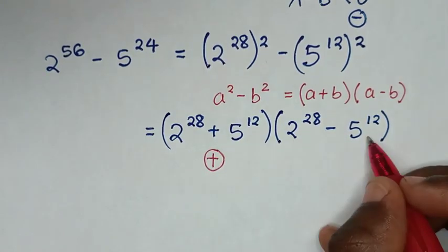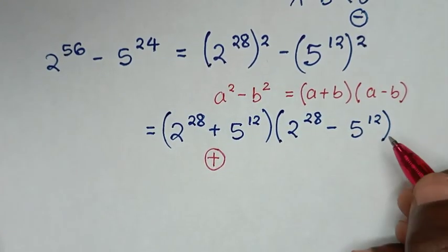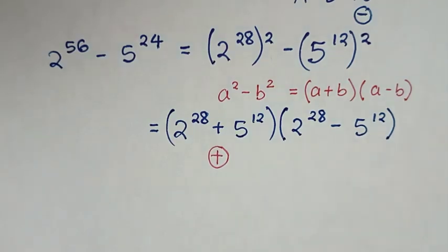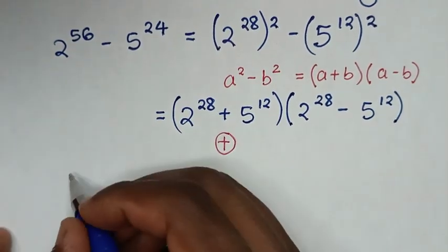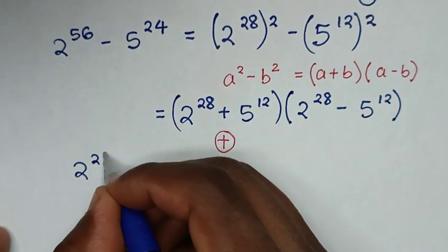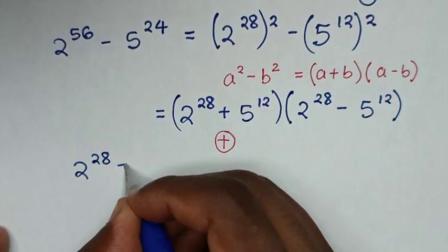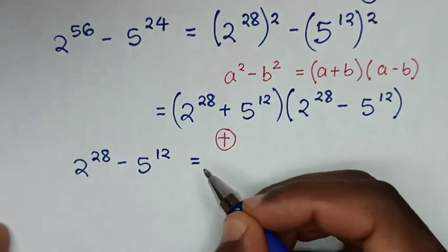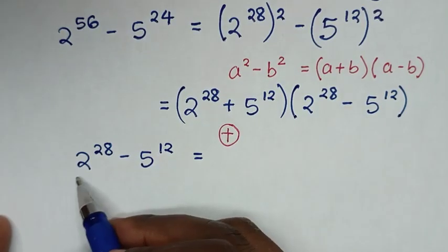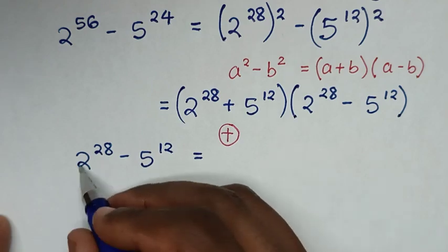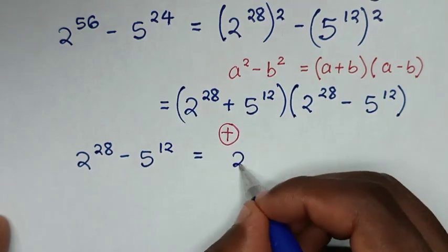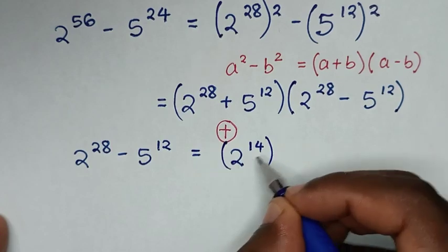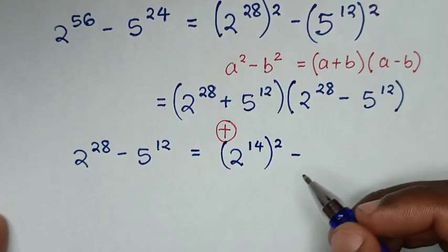So we'll continue to find the difference. From the part which is 2 power 28 minus 5 power 12, we make this also in the form of a perfect square. So 2 power 28 is the same as 2 power 14 squared.